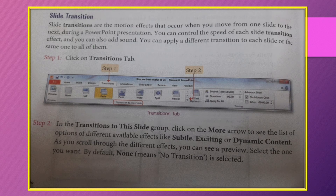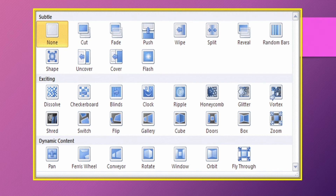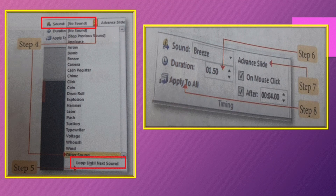Slide Transition. Slide transitions are the motion effects that occur when you move from one slide to the next. When one slide ends and the next opens, the effect between them is called slide transition. For this, firstly select the slide, click on the Transition tab, then click on the drop-down arrow button. Select any transition effect. When you click on Effect Options, you can change settings like selecting sounds from the sound box or clicking Loop Until Next Sound. The Duration box lets you set the timing.